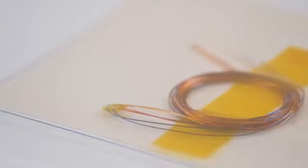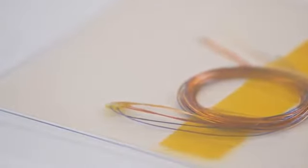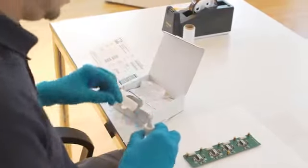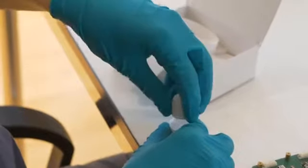In this video, we will show you how to bond the HBM RF91 miniature rosette on a PCB. We use the HBM Z70 cold curing adhesive.